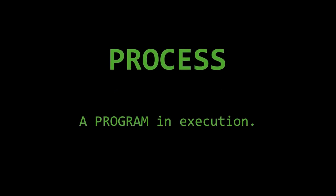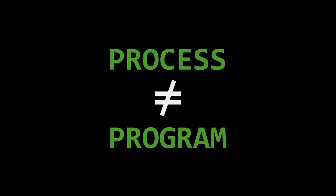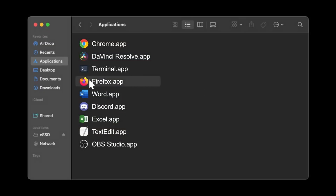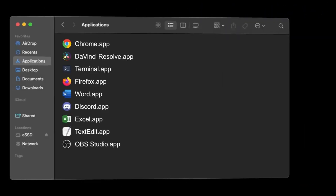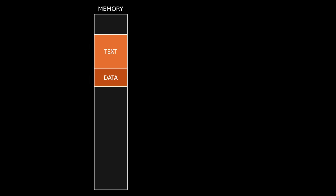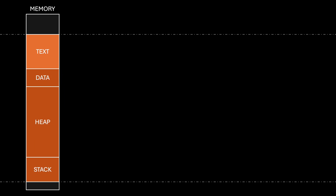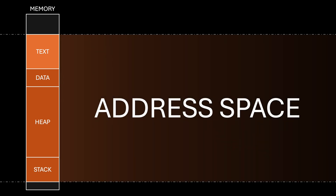As we discussed in my previous video, a process is informally defined as a program in execution, meaning that these two concepts are not the same. A program is a passive entity, such as an executable file that we can launch to start running. When we run a program, its executable file is loaded into memory — at this point, our program becomes a process. The memory allocated to a process receives a special name: the address space of the process. We'll return to this concept later in the video.